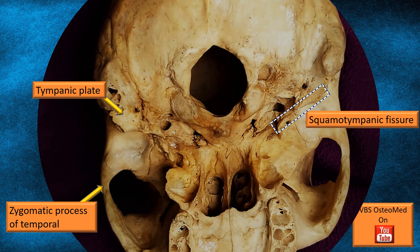Looking at the opposite side, at the junction between the petrous temporal and the greater wing of the sphenoid, exactly at the point where the tympanic plate is in continuity with the rest of the temporal bone, there is a fissure visible as a dark line. That fissure is the squamotympanic fissure. It is easy to identify as it is at the posterior part of the mandibular fossa.